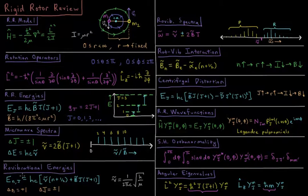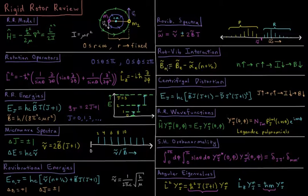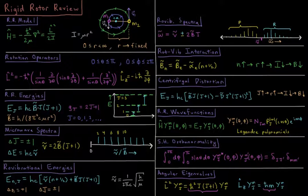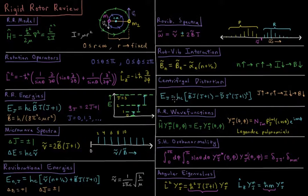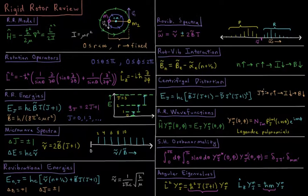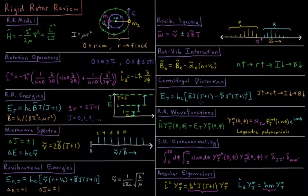For vibrational transitions, molecular vibrations are not always completely harmonic, so we can account for anharmonicity with a rotation-vibration interaction constant, where the rotational constant becomes a function of vibrational energy level. As we go up in vibrational energy, the bond length increases slightly, bringing the moment of inertia down and decreasing the rotational constant. Additionally, at higher rotational energies, centrifugal distortion increases the bond length, lowering the moment of inertia and the rotational constant, with the extent of this effect represented by the centrifugal distortion coefficient d-bar.